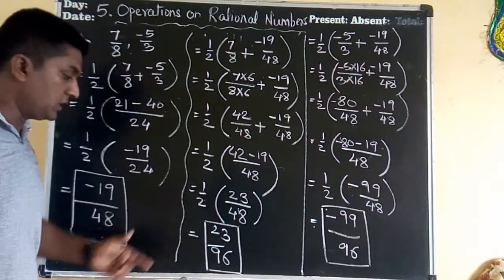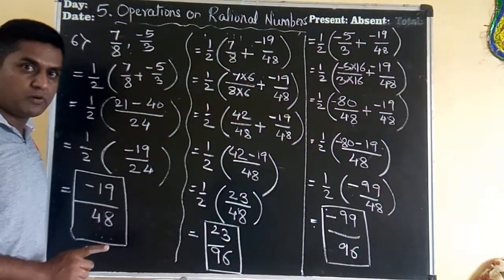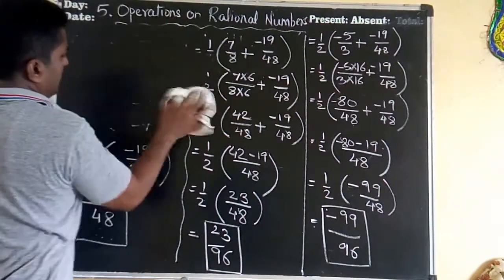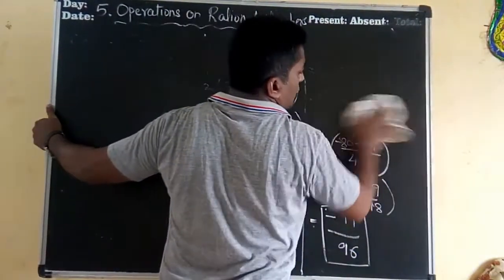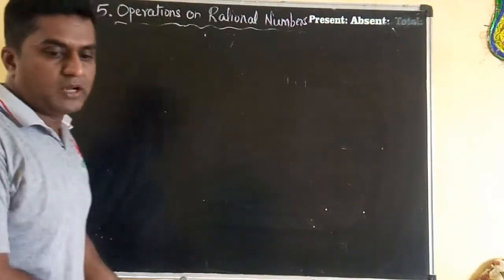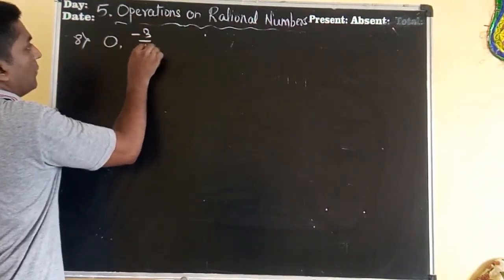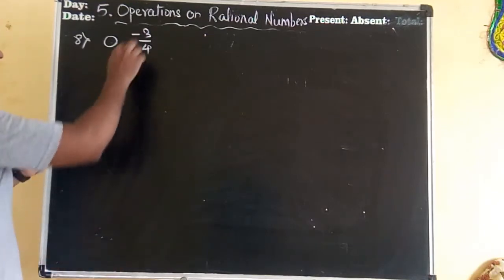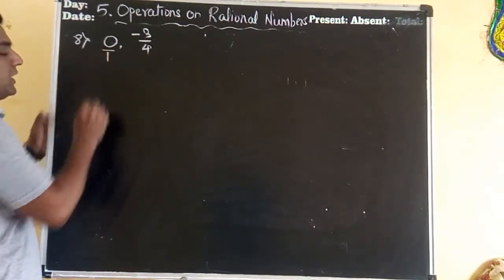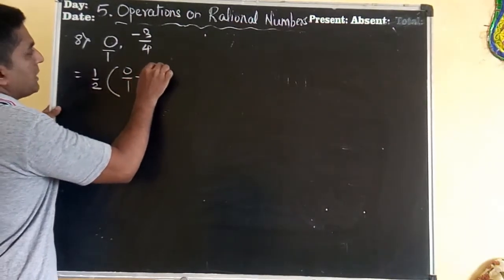The whole blackboard was utilized for solving this sum. Now the last sum of the day is question number 8: 0 and minus 3 upon 4. Note that 0 is a rational number — it can be written as 0 upon 1. So the first rational number is 1 upon 2 × (0 upon 1 + minus 3 upon 4). Adding 0 leaves minus 3 upon 4. So 1 × minus 3 upon 2 × 4 = minus 3 upon 8.